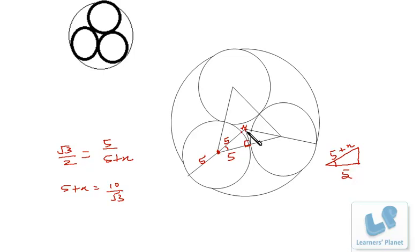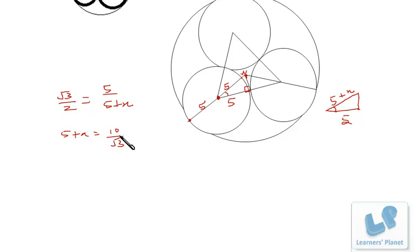And if I add 5 to it, this will be the length from this point to this point—that is nothing but the radius of the outer circle. So the radius of the outer circle is 10 by root 3 plus 5.